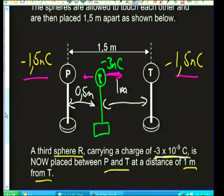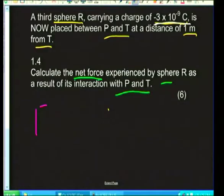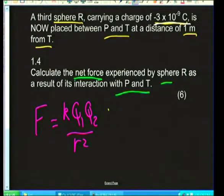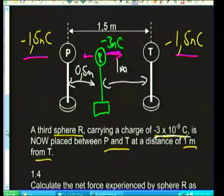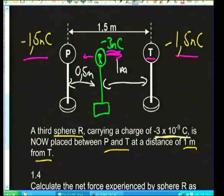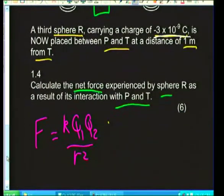Coulomb's law is: F = kQ₁Q₂ / r². Comparing the force P exerts on R versus the force T exerts on R: the charges are identical in both pairs (−1.5 nC and −3 nC), so the only factor that differs is the distance.